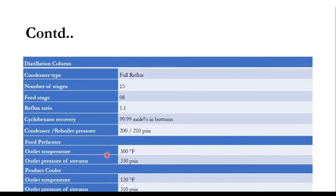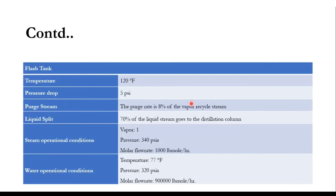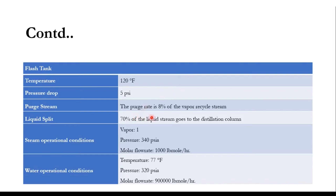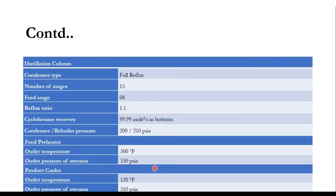The feed preheater has an outlet temperature of 300°F and outlet pressure of 330 psia. The product cooler outlet temperature is 120°F, and outlet pressure for both streams is 310 psia. The purge stream is 8% of the vapor recycle stream S7 while the remaining 92% is S9. For the liquid stream, 70% goes to the distillation column as S10 and 30% is recycled back.